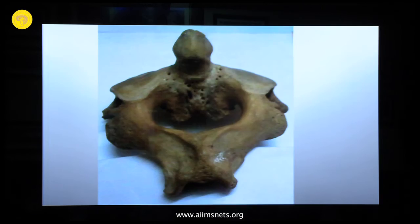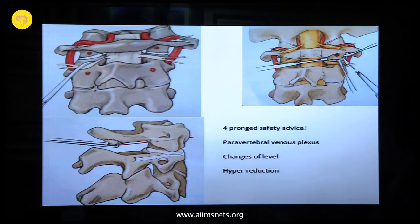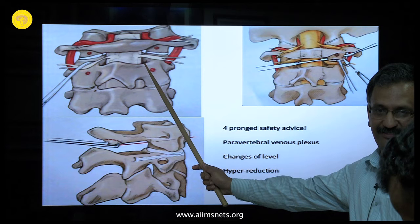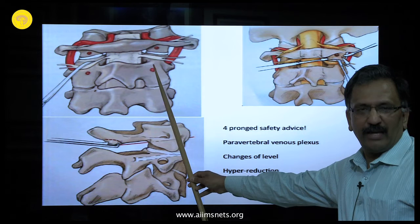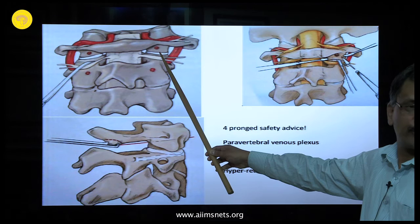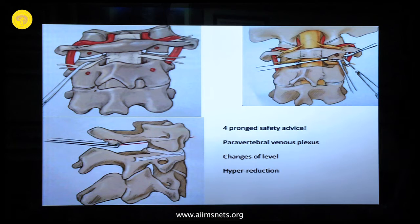The four-pronged safety advice for C2 fixation: one — identify and stay medial to the medial border; two — do not go lateral to the lateral border; three — stay along the direction of the pars angulation; four — use the superior articular process of C2 as a directional hint. These four points give you very safe fixation. We simply use a drill — no awl and tap needed, and no C-arm required.